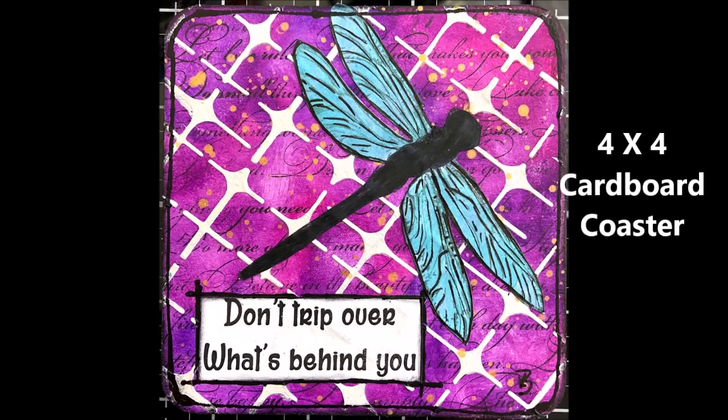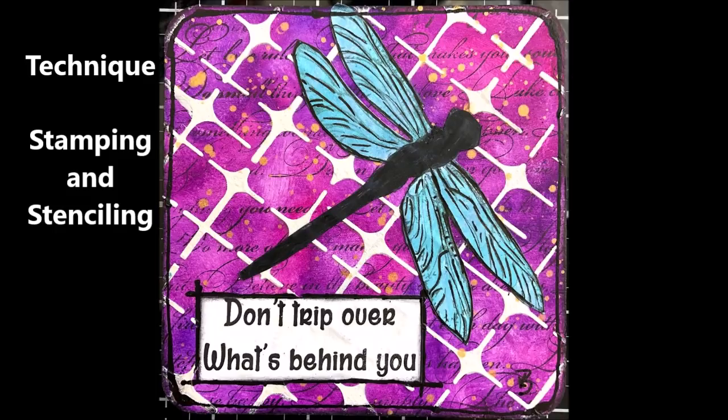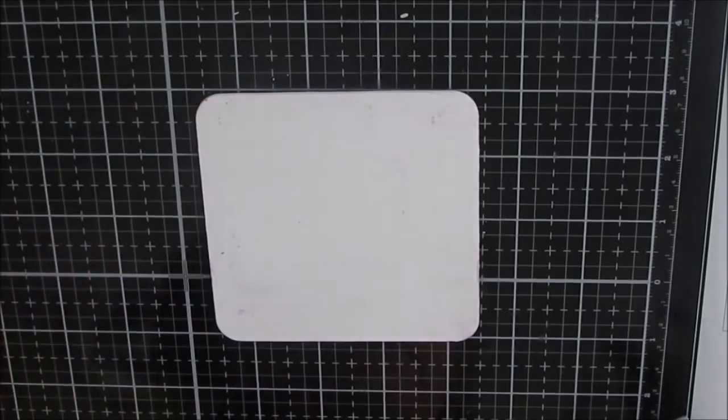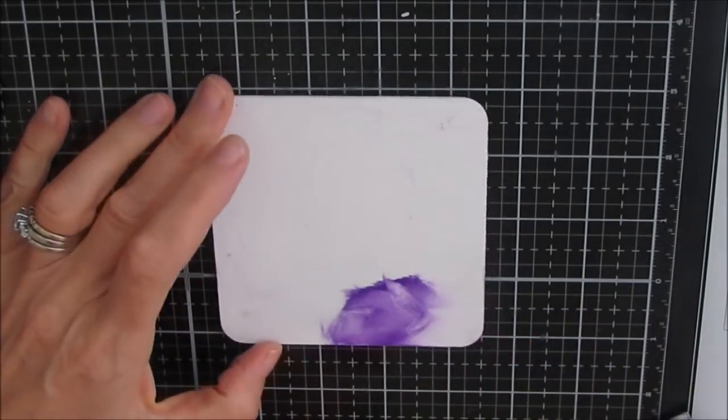Today I'm working on a 4x4 cardboard coaster and the technique that I'm going to be using is stamping and stenciling. There's a little modeling paste thrown in here as well. So I'm starting with this 4x4 coaster. I'll put a link to the coasters and magnets down below.